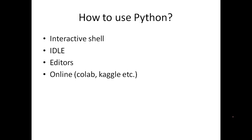Python can be run in different ways. There is an interactive shell in the IDLE environment where you can write and execute lines directly. Or in the IDLE environment you can open a file, type the code, and save and run the program. You can also use editors like VI or Notepad, save the script, and run it from the command line. Or if you want to run online, there are different sites like Colaboratory or Kaggle where you can write and run code.